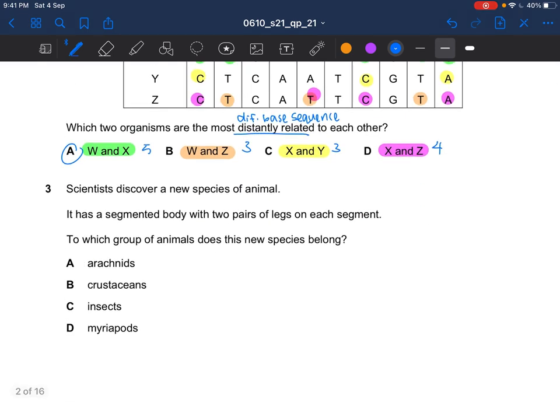Next question, scientists discover a new species of animal. It has a segmented body with 2 pairs of legs on each segment. To which group of animals does this new species belong? The answer would be Myriapods. Segmented body with 2 pairs of legs on each segment. The body consists of many segments and each segment has jointed legs. It's not Arachnids. Arachnids have 4 pairs of legs. It's not crustacean, not insects. Because we have odd pairs of legs. So we definitely can't have 2 pairs of legs on each segment.